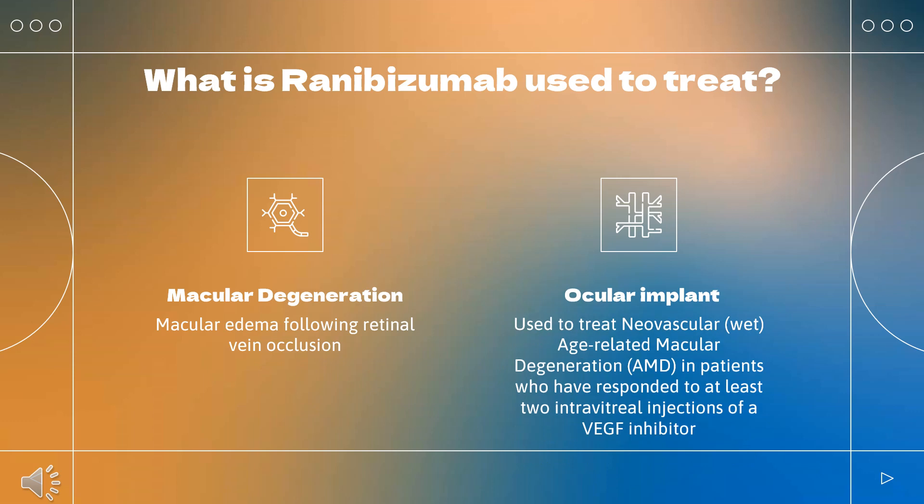Ranibizumab injection for intravitreal use is indicated to treat neovascular (wet) age-related macular degeneration (AMD), macular edema following retinal vein occlusion, diabetic macular edema, diabetic retinopathy, and myopic choroidal neovascularization.